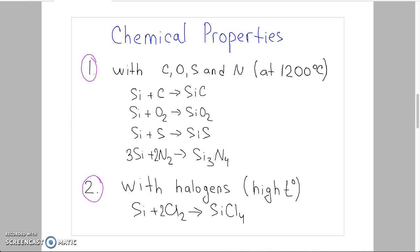The chemical properties of silicon are very similar to carbon. Silicon reacts with carbon, oxygen, sulfur, and nitrogen at high temperatures, about 1200 degrees Celsius. Here we can see the mentioned reactions.